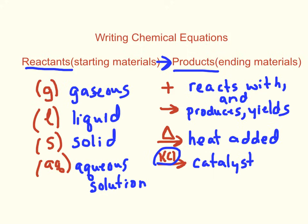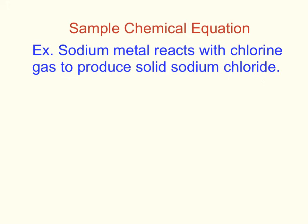Here's a sample word chemical equation given to you with the names, and we're going to write out the chemical equation with the symbols. It says that sodium metal reacts with — we know 'reacts with' means a plus sign. Sodium metal is just Na. Since it's a metal, it's a solid, so I'm going to add a little S: Na(s).